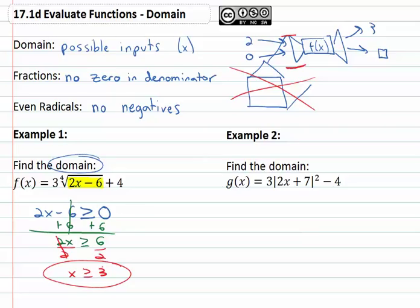How about example two? If g(x) = 3|2x + 7|² - 4, what's the domain here? Well what's interesting is we don't see any of those things we were warned about. There's no even radicals, there's no fractions. It's just a whole bunch of operations. And if you think about the operations, there's no limitation on the operation.